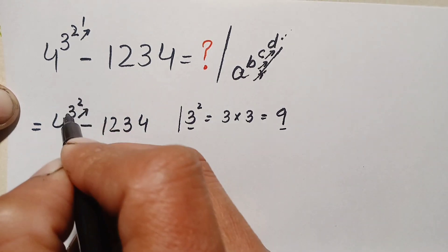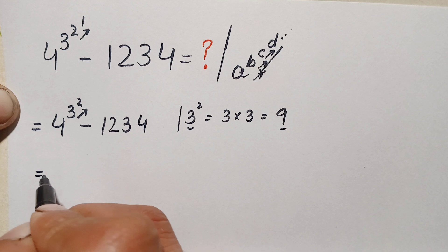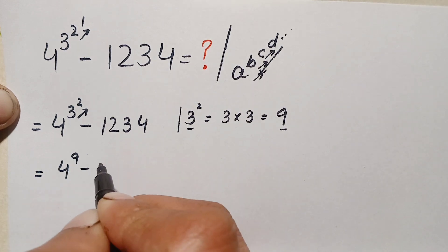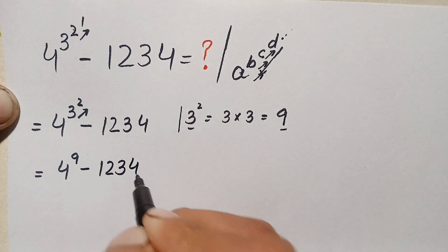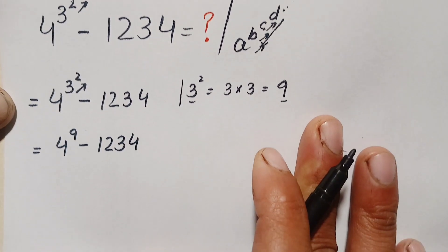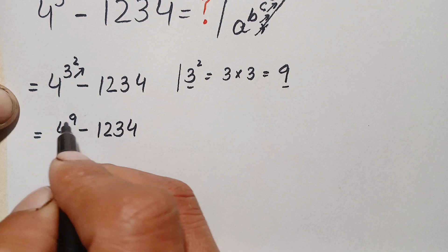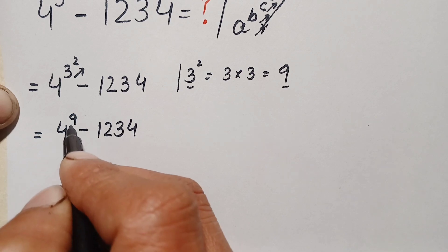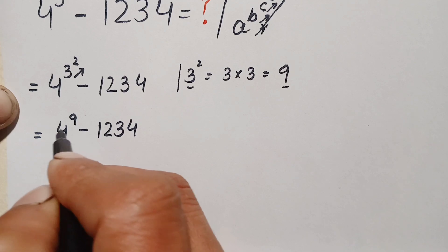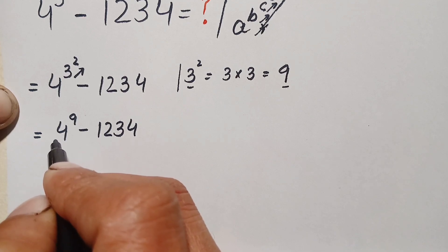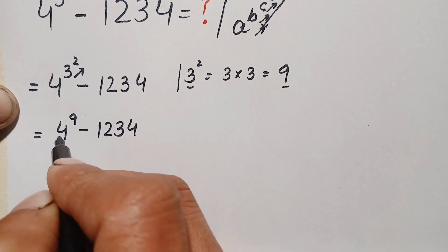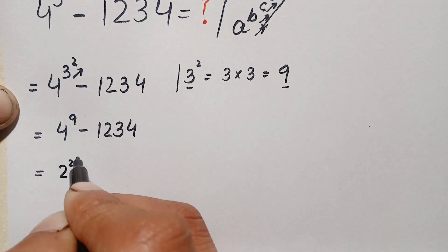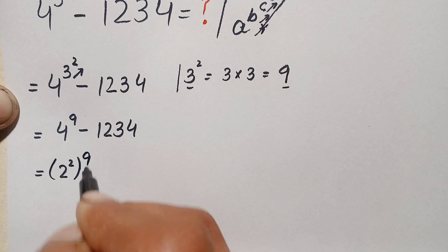So we replace this power with 9. This becomes 4 raised to power 9, minus 1234. Now we have to find the value of 4 raised to power 9. We can change this base to further simplify: we can write 4 as 2 squared, giving us 2 raised to power 2, raised to power 9, minus 1234.